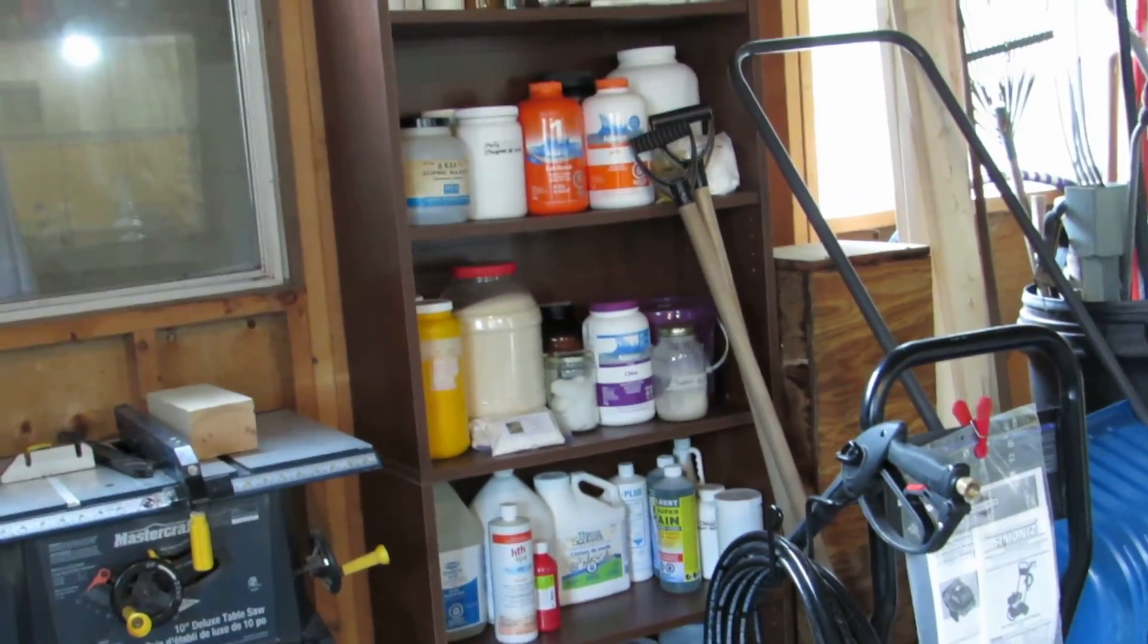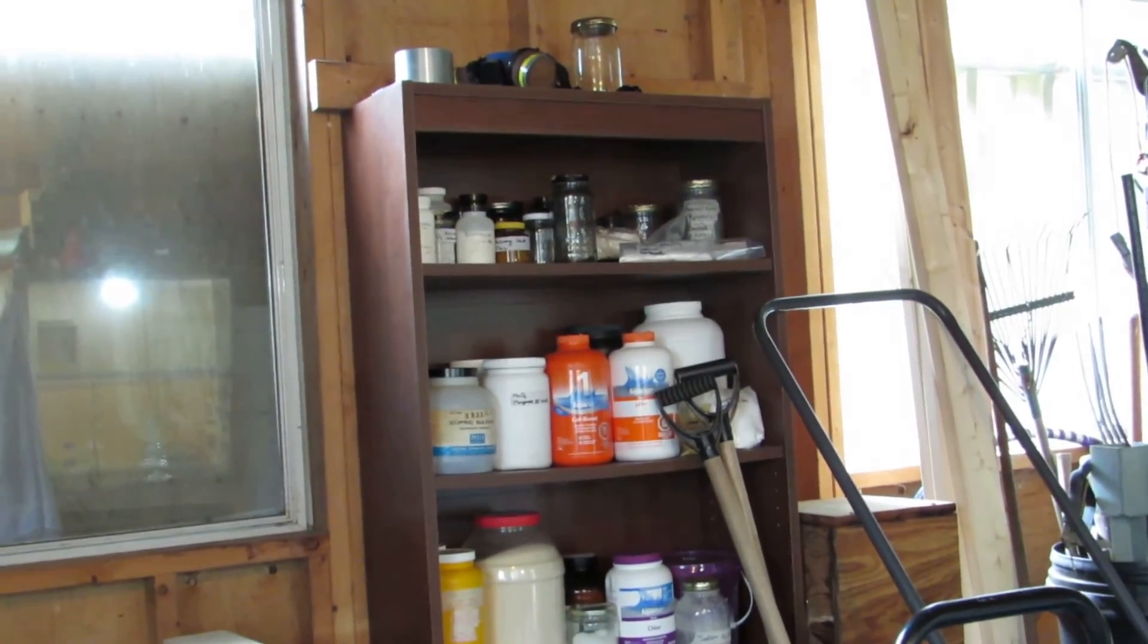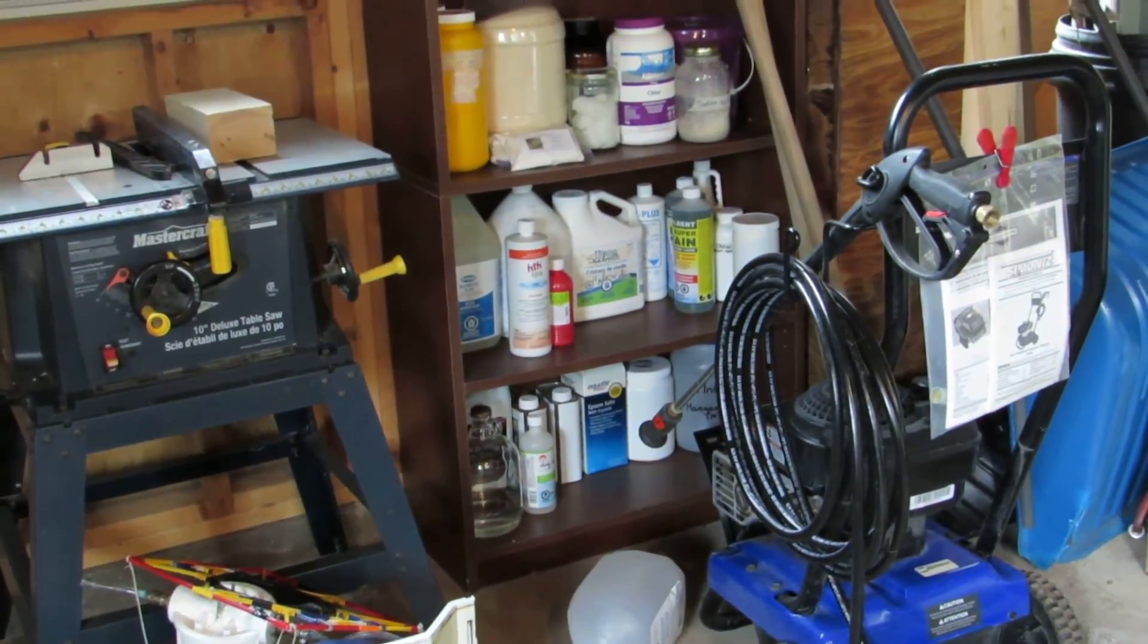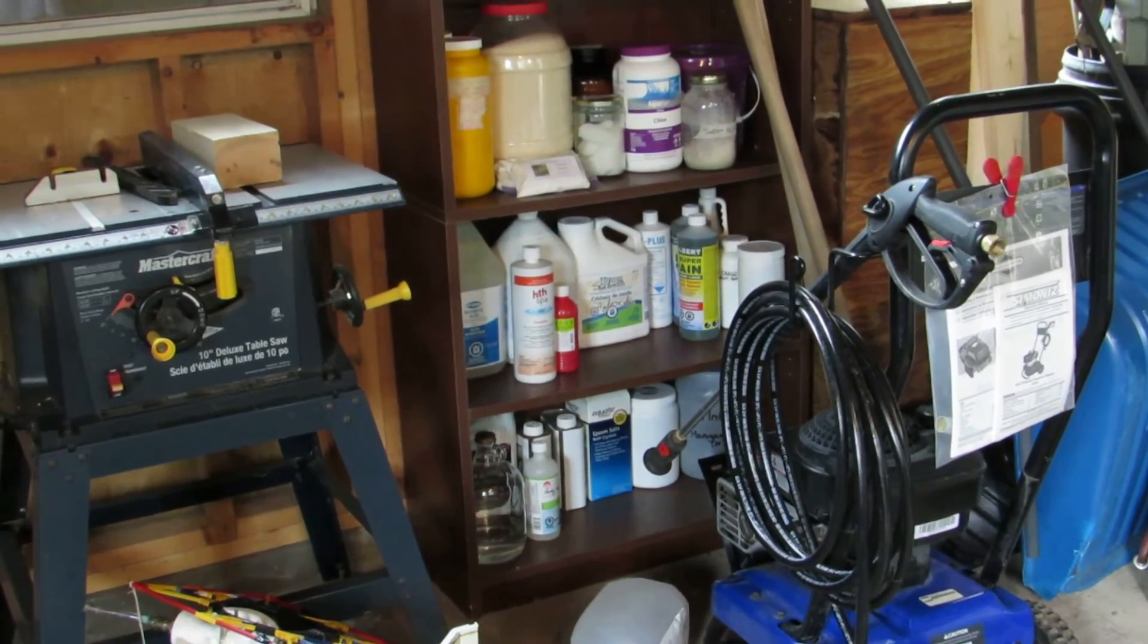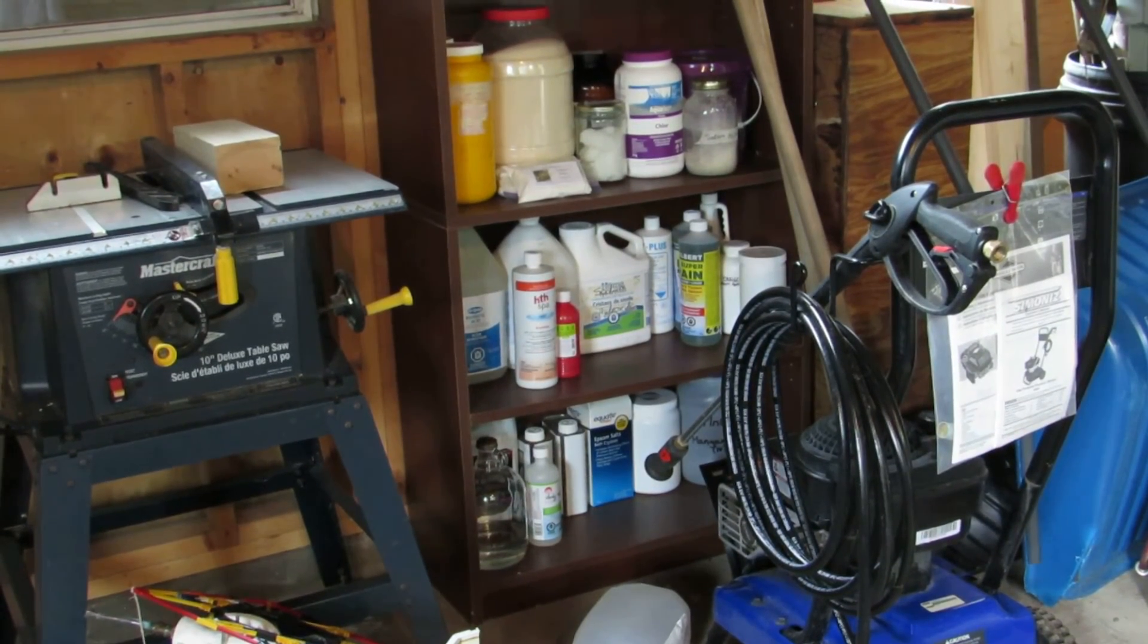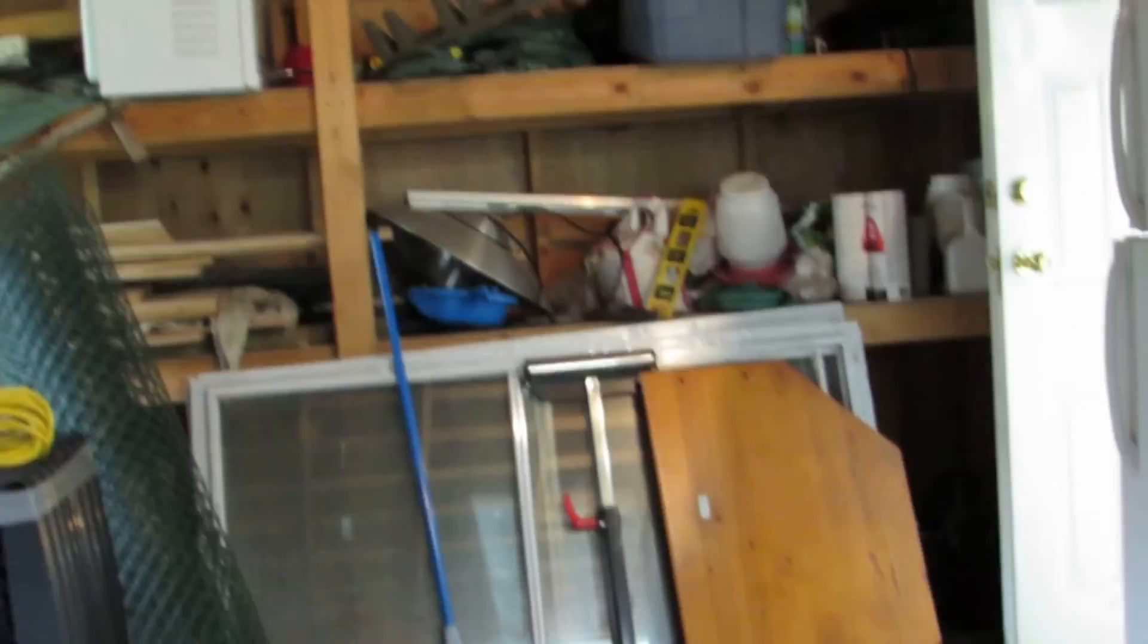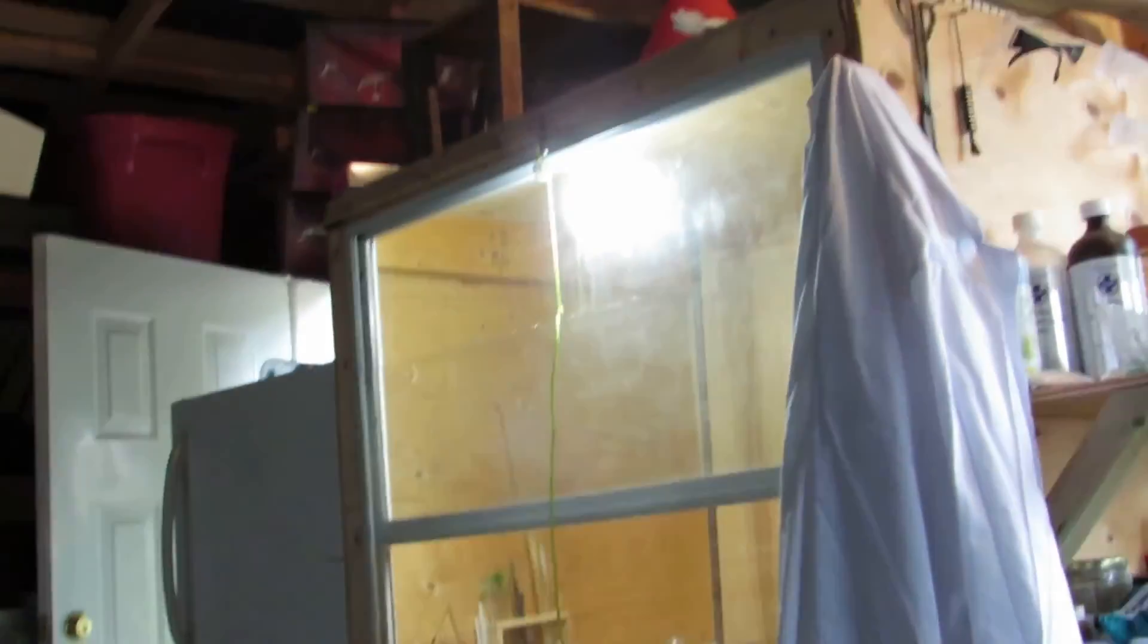And then I do have this other shelf over here and this is where I store a lot more of my bulk chemicals. So that's everything from sodium hydroxide to ammonium sulfate and calcium chloride. All sorts of stuff up there. And I do have to share this space with my dad who's got a whole bunch of other stuff over there. But for the most part a lot of this is mine and it all works out pretty well.